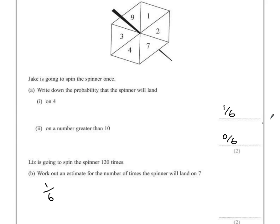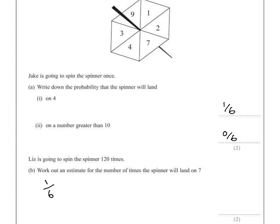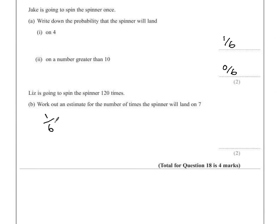To use that probability, we can multiply it by the number of times being spun. So 1 sixth multiplied by 120. Multiplying by 1 sixth is the same as saying divide 120 by 6, how many times will 6 fit into it? So 120 divided by 6.